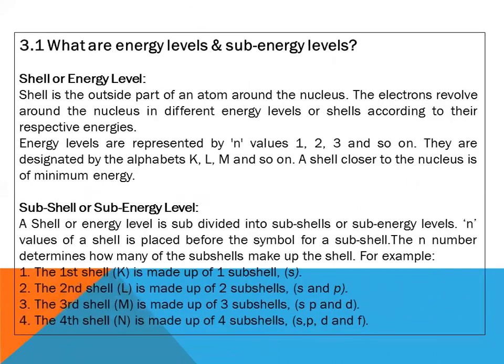Recap: What are energy levels and sub-energy levels? Shell or energy level is the outside part of an atom around the nucleus. The electrons revolve around the nucleus in different energy levels or shells according to their respective energies. Energy levels are represented by n values: 1, 2, 3 and so on. They are designated by the alphabets K, L, M and so on. A shell closer to the nucleus is of minimum energy.